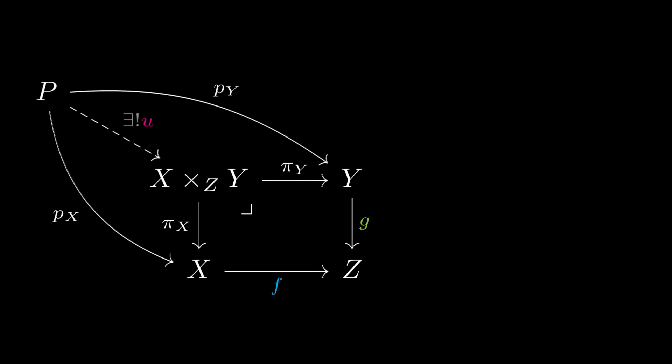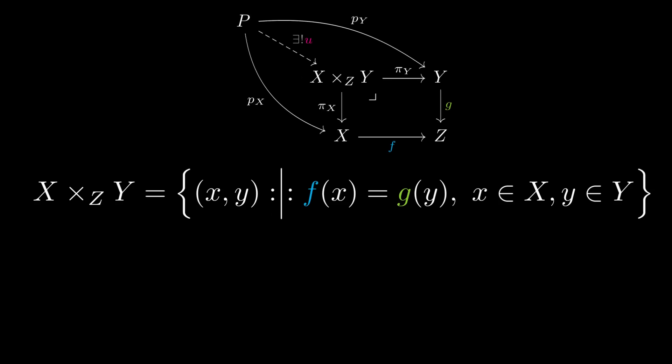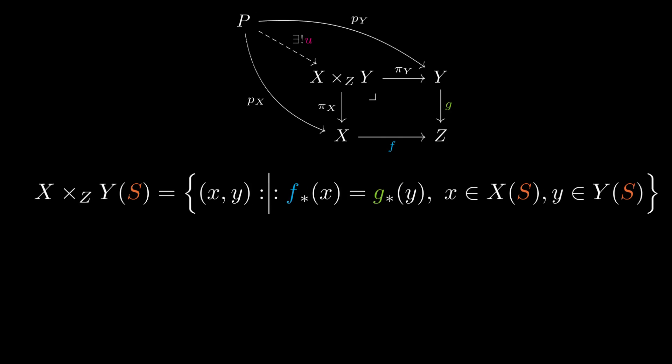If all the objects present are just sets, we find that the fiber product is just the set of pairs of elements, one from X and one from Y, satisfying a very simple equation in Z. This is much simpler, right? Well, the Yoneda Lemma gives us a way of doing almost exactly the same thing in an arbitrary category.